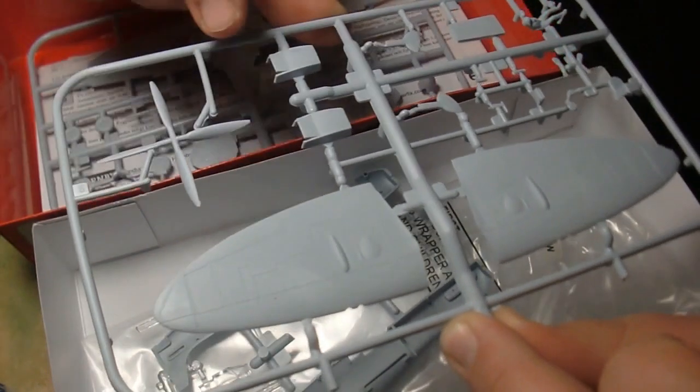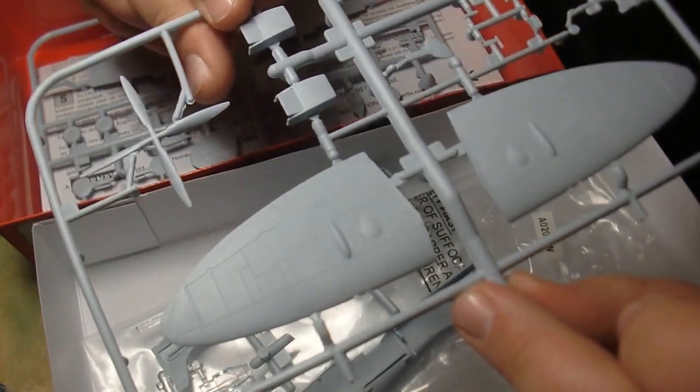And, there is no cockpit detail whatsoever in here. There's a little bit of a frame where the gauges would go and stuff. But, there's a little notch there for the gun sight. So, absolutely nothing there. It's kind of sad. And, here we have the wings. And, they look very nice. Very clean. There's flash on a few areas, but it's incredibly minor.